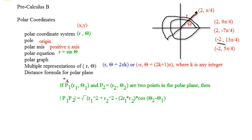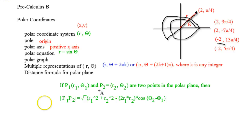The distance formula for the polar plane is going to be a lot like a formula you've used in the past called the law of cosines — because it is. If you have two polar points, you always compare them to the origin, making a triangle, and you want that third side. The distance formula for the polar plane is the law of cosines. That's it for working with polar coordinates.